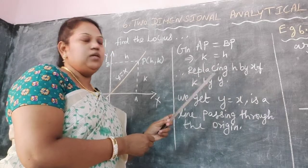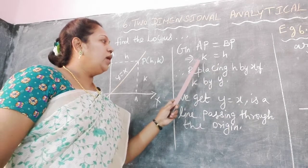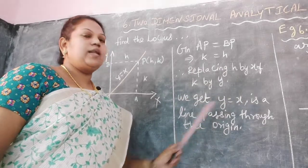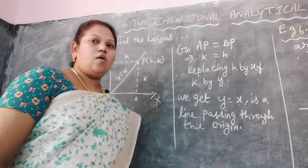Replacing h by x and k by y, we get y equals x. This is a line passing through the origin.